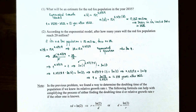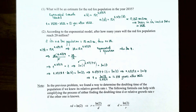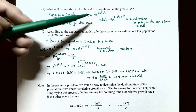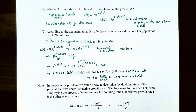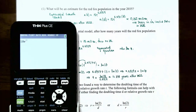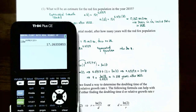Part 1: what will be an estimate for the red fox population in 2035? The year 2035 corresponds to t = 2035 − 2022 = 13 years after 2022. So n(13) = 10 · e^(0.042 × 13) ≈ 17.263. Since our units are in millions, the red fox population is approximately 17.26 million in the United States in 2035, according to our exponential growth model.